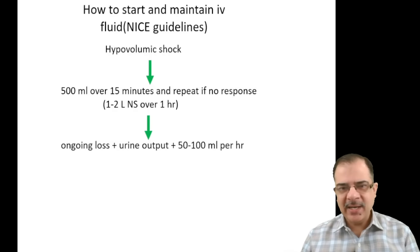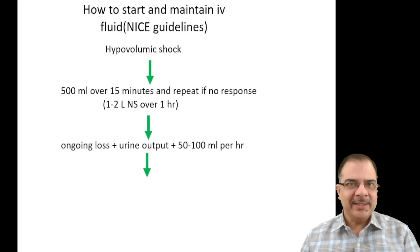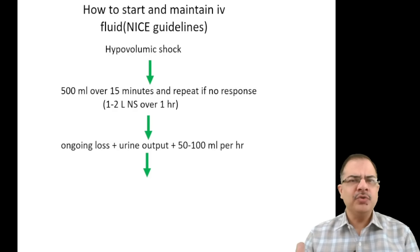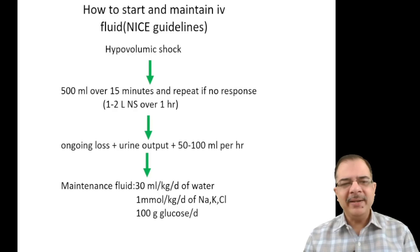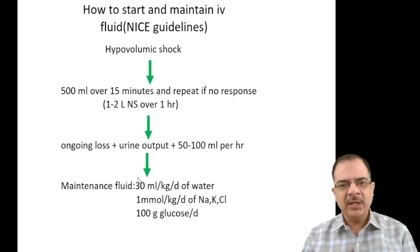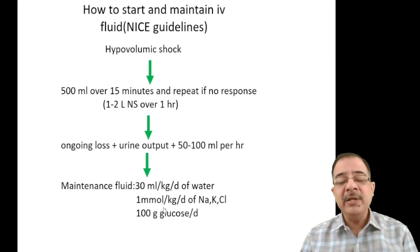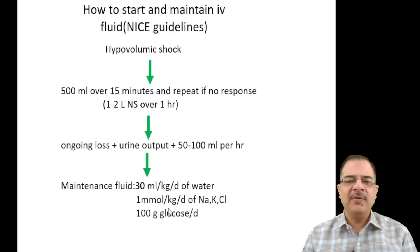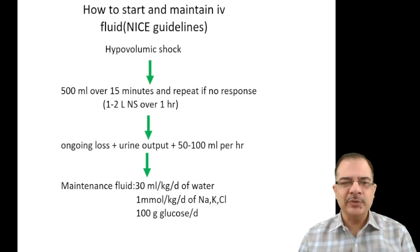Once the underlying condition is stabilized and the patient cannot accept orally, give maintenance fluid: 30 ml/kg/day of water and electrolytes — an easy formula is 1 mmol/kg/day each of sodium, potassium, and chloride — plus 100 grams of glucose per day to prevent starvation ketoacidosis.